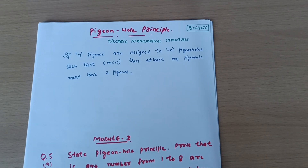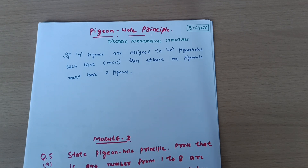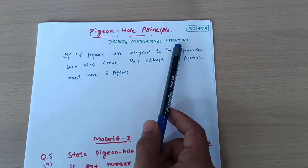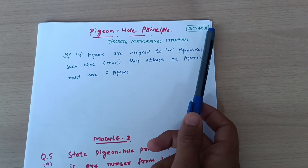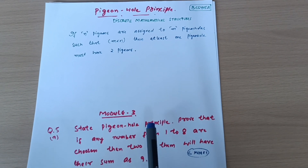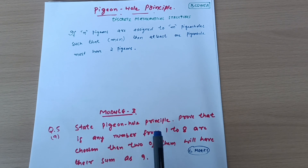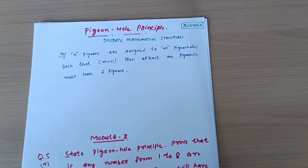Good morning, good evening, or good afternoon — I don't know what time you are watching the video. Dear friends, I will discuss here the Pigeonhole Principle. It is the subject Discrete Mathematical Structures of the fourth semester CSE stream students, subject code BCS405A. First I will discuss the statement, then we'll move through the model question paper questions based on the Pigeonhole Principle.